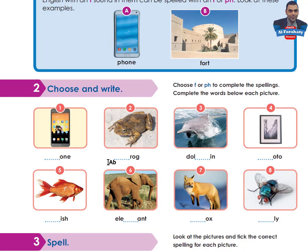The words to complete are: phone, frog, dolphin, photo, fish, elephant, fox, fly. Take your time to complete the words, then come back to check your answers.